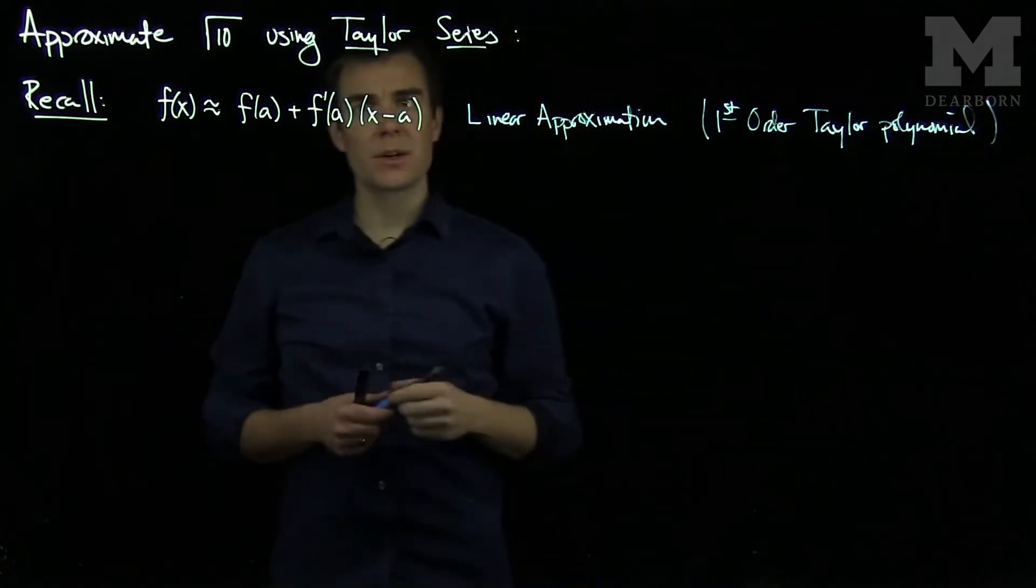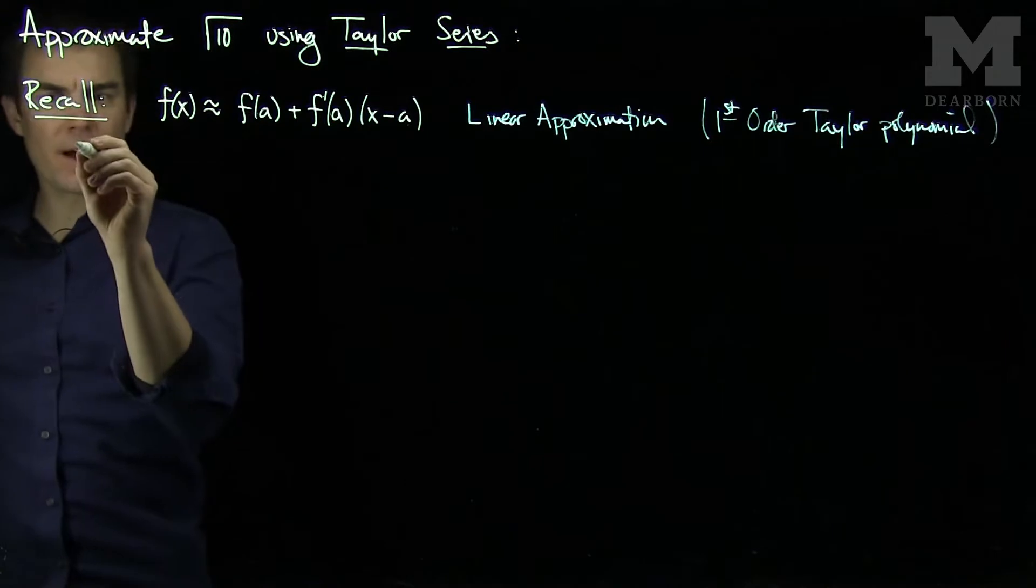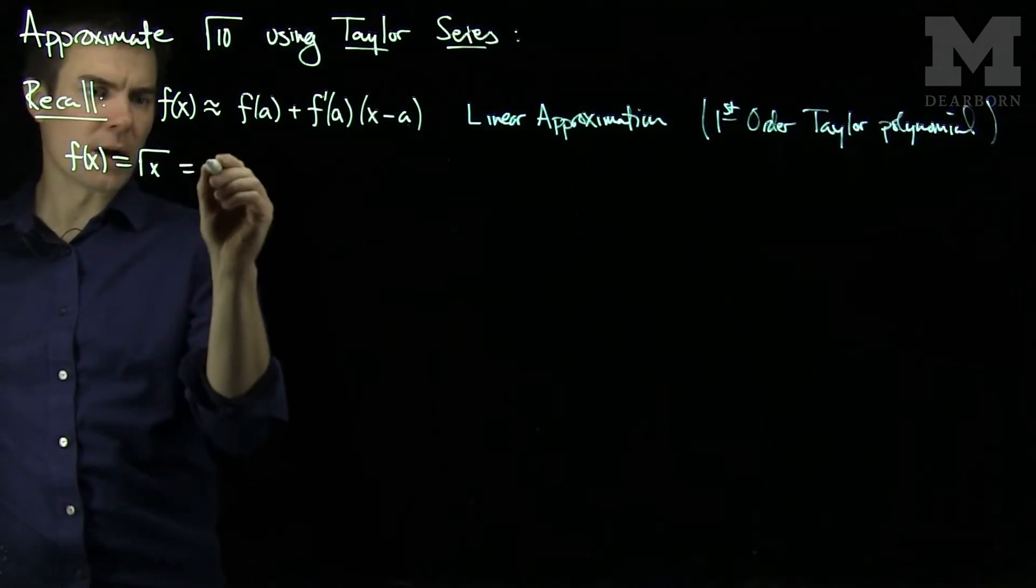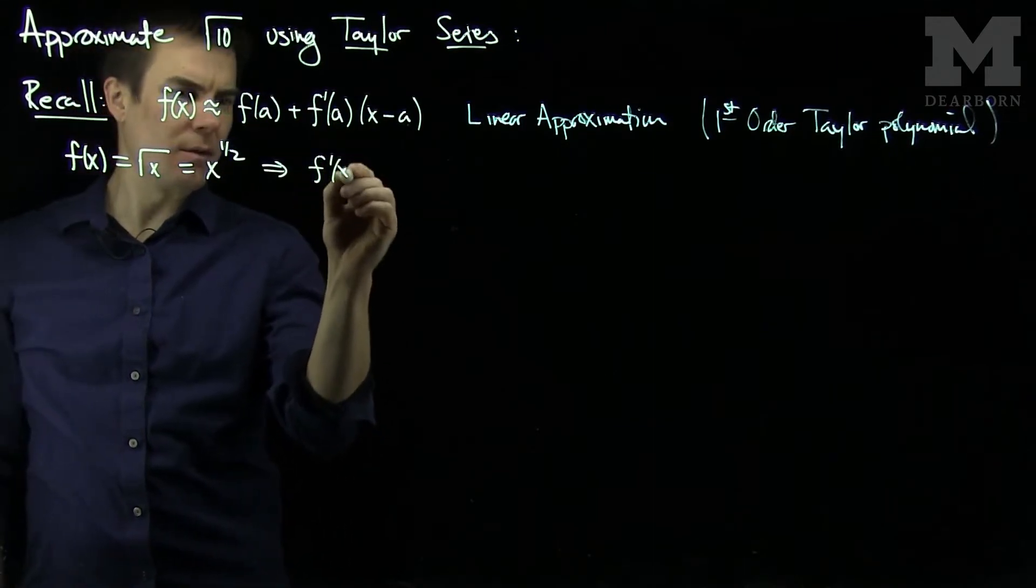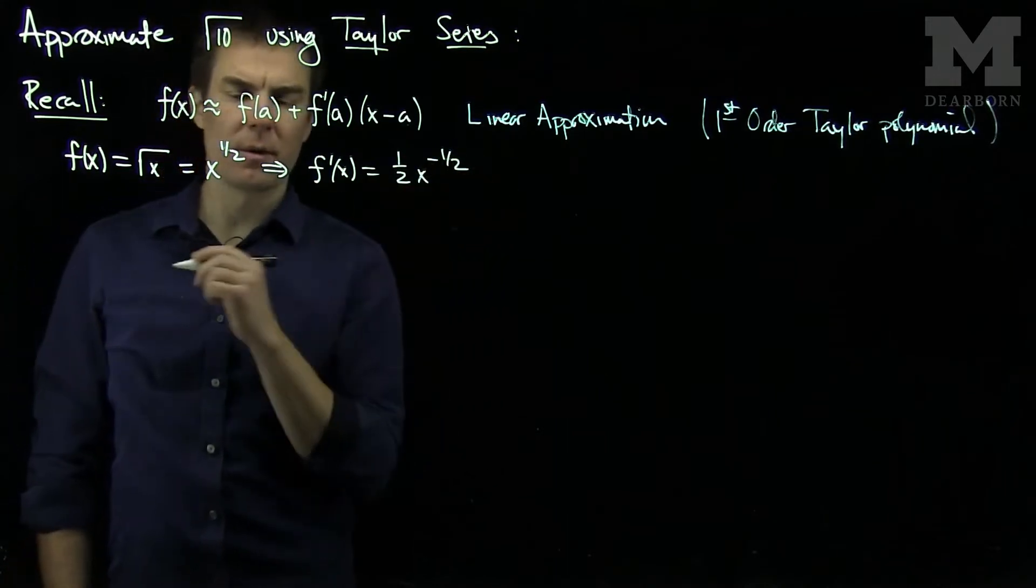So if we add more terms to this series, we'll get a higher order approximation. Now what we'll do here is we'll take f(x) to be the square root of x, or x to the 1/2 power, which tells us that f'(x) will be 1/2 x to the negative 1/2 power.